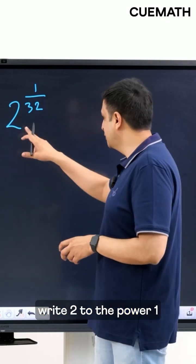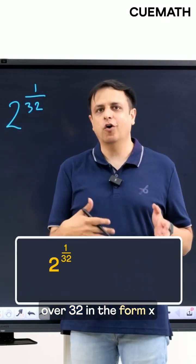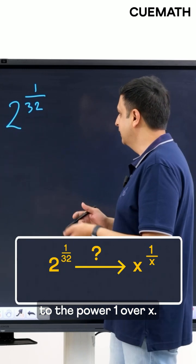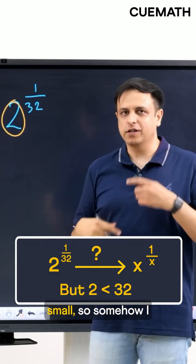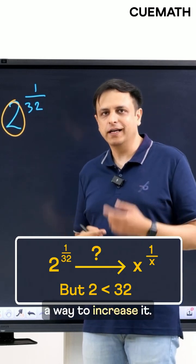So my goal is now to write 2 to the power 1 over 32 in the form x to the power 1 over x. The problem is that the base here is too small so somehow I need to figure out a way to increase it.